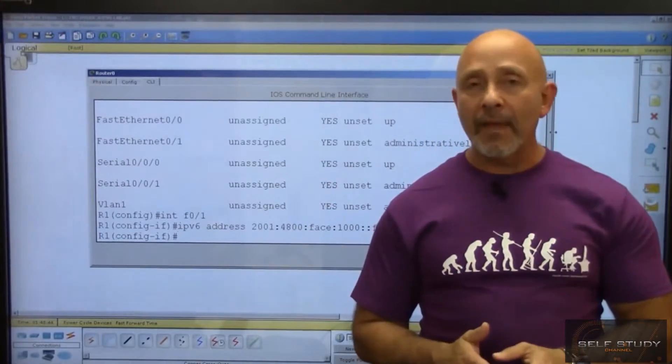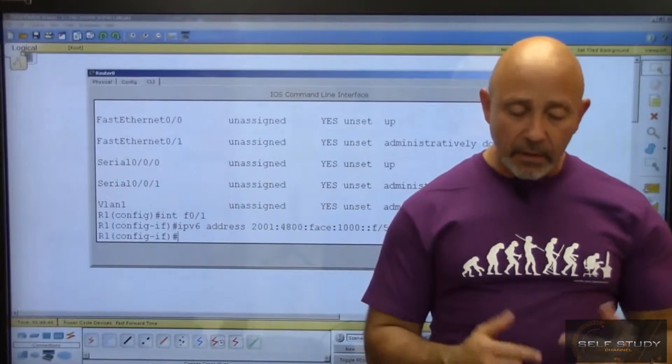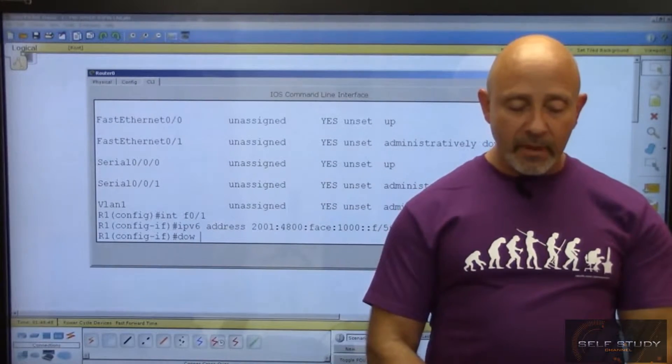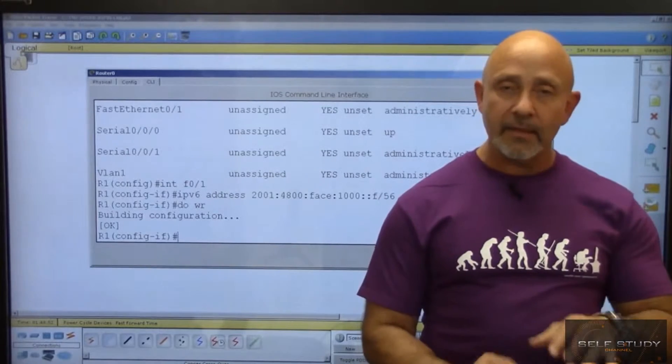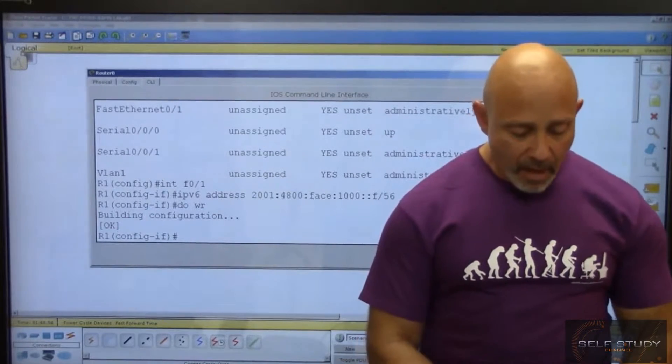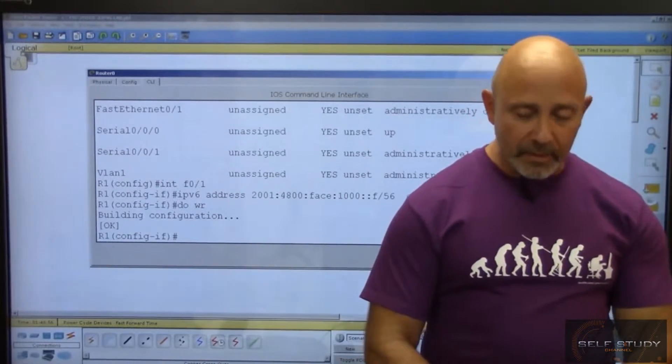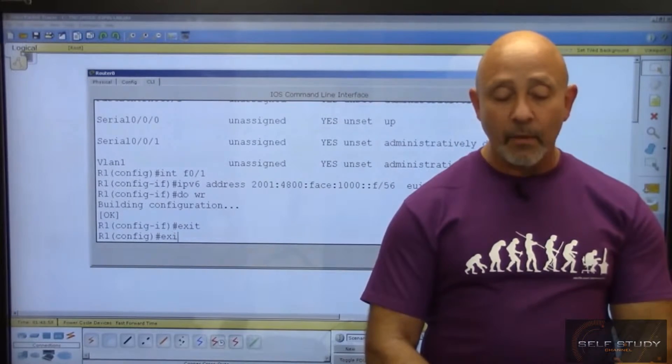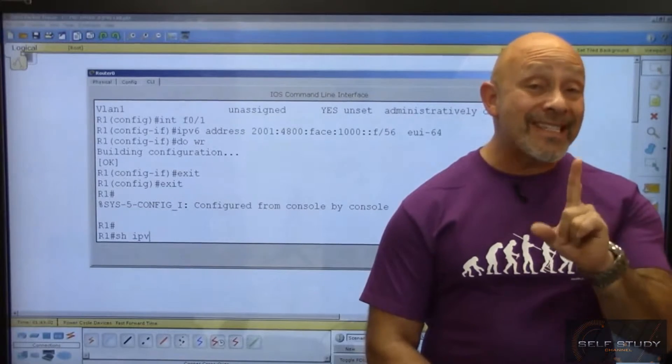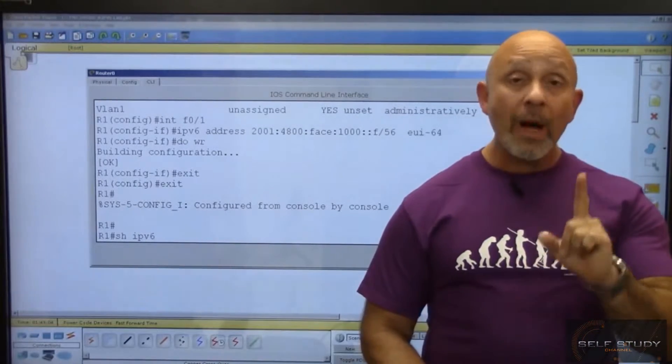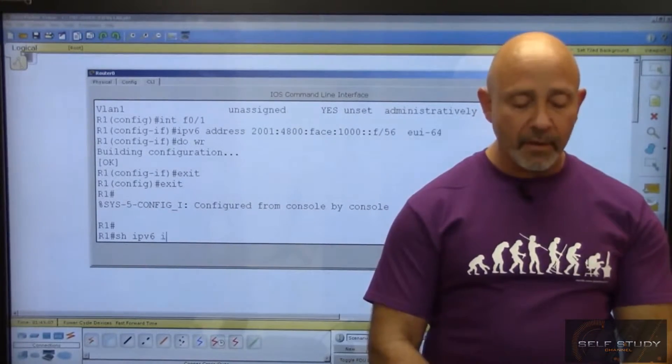Let's take a look at what we've done. I'm going to copy what I've done, I'm going to do a 'do WR'. Yes, you cannot do that in the test, you have to exit, exit, copy run start. Let me do it the right way, the test way.